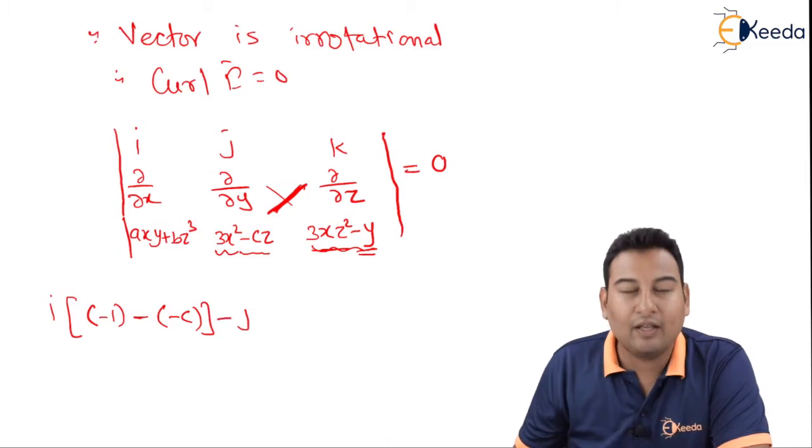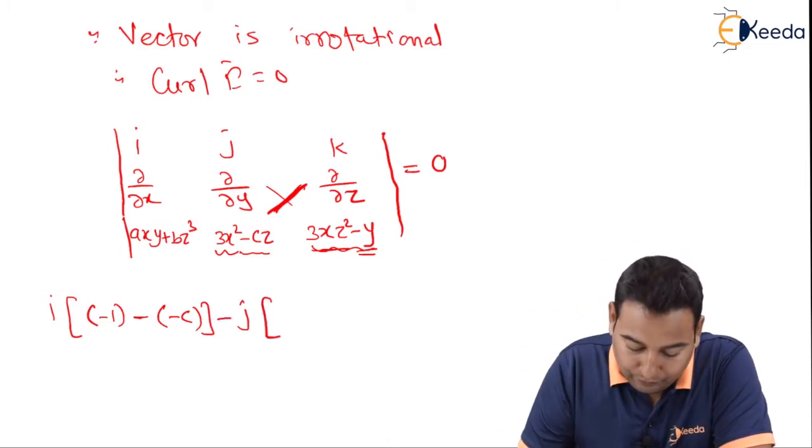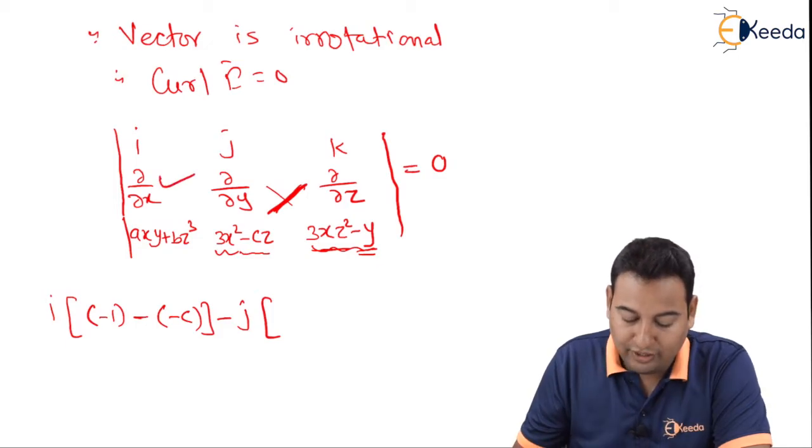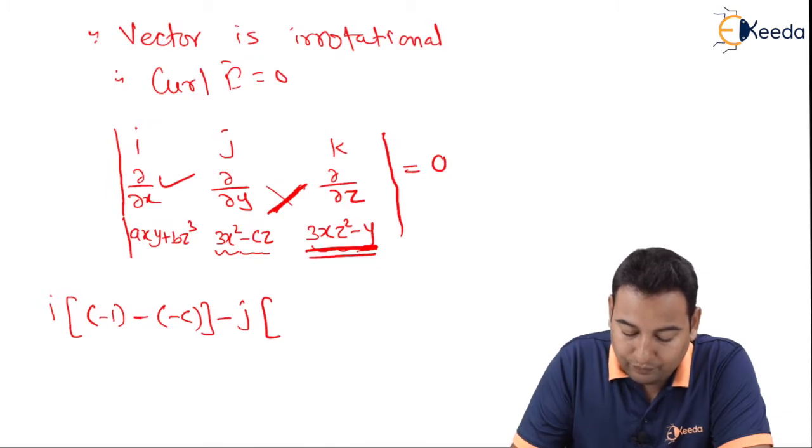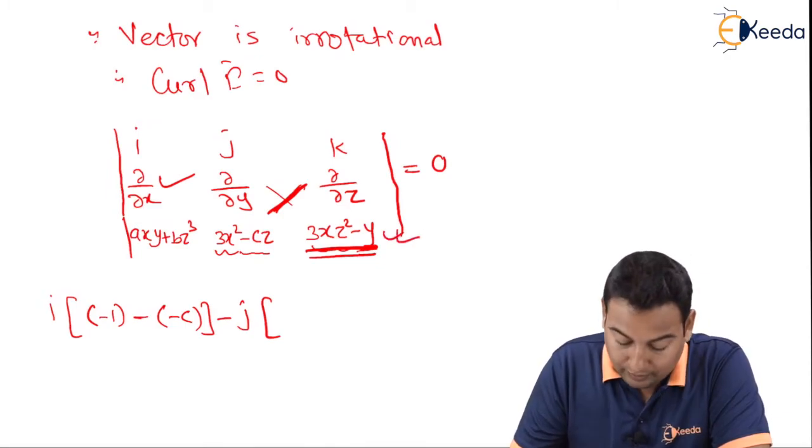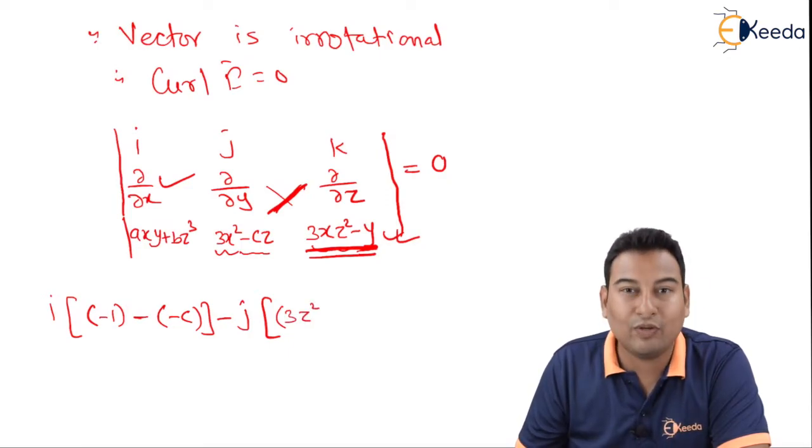Minus j. Second term is minus. I'm going to leave the column and row. Differentiating with respect to x, that means del by del x of this particular term. 3z squared constant, x derivative is 1, minus y derivative is 0.